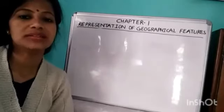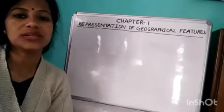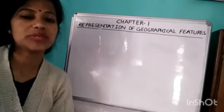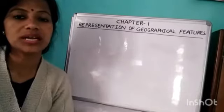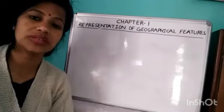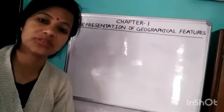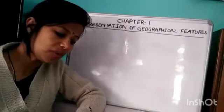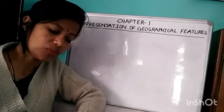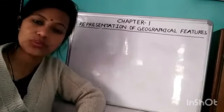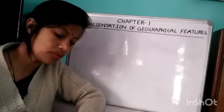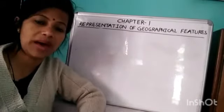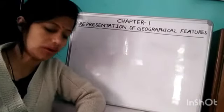Hello class 7, let's start a new chapter in geography: Chapter 1, Representation of Geographical Features. We need the help of maps, which are the most effective tool to learn about the world. Through maps, we learn about the world.